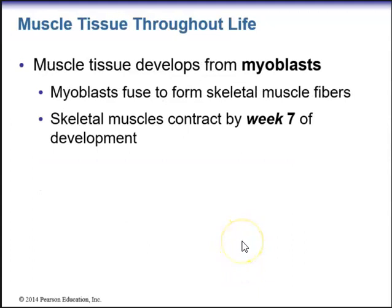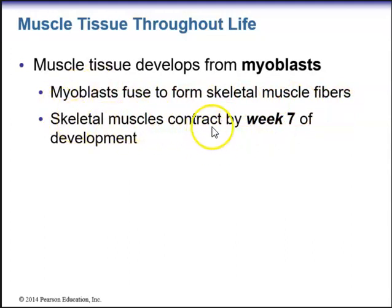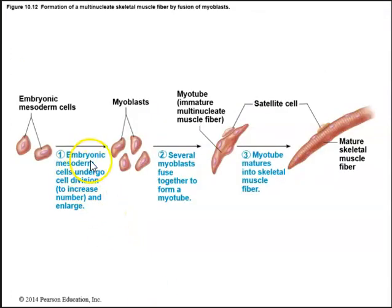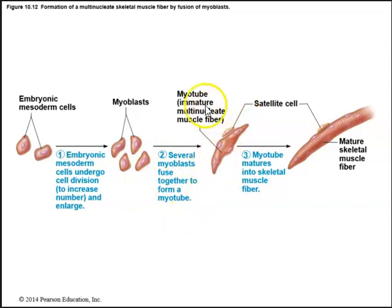Muscle tissue develops from myoblasts — 'myo' meaning muscle and 'blast' meaning immature cell. Myoblasts fuse to form skeletal muscle fibers, and by week seven, skeletal muscles contract. Mesodermic cells undergo cell division to form myoblasts, several of which fuse to form a myotube — an immature multi-nucleate muscle fiber. Satellite cells surround the myotube. As the myotube matures, it becomes a skeletal muscle fiber.